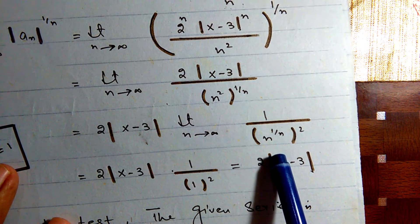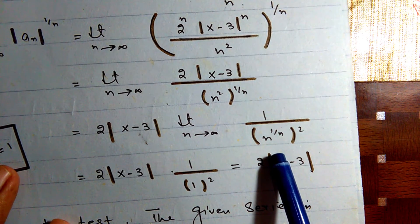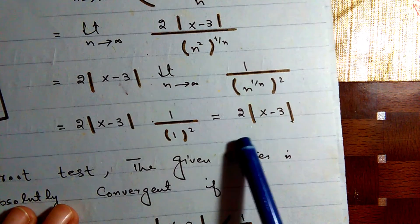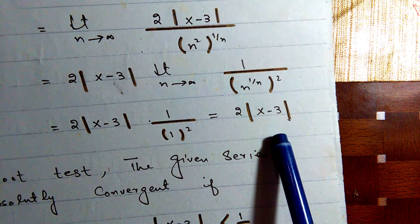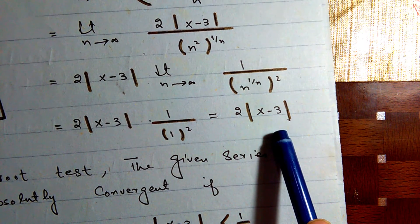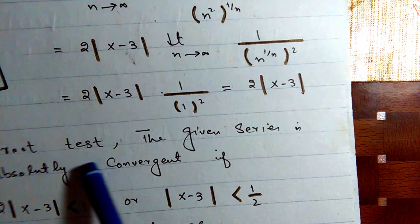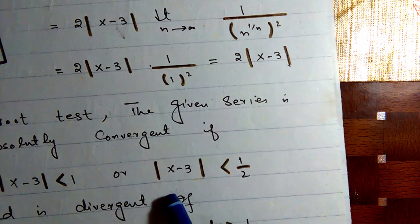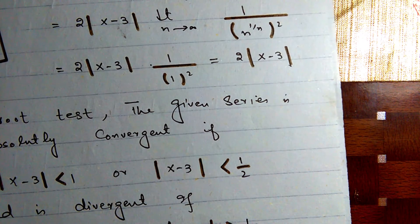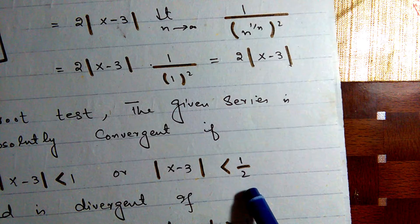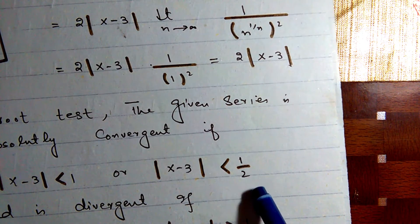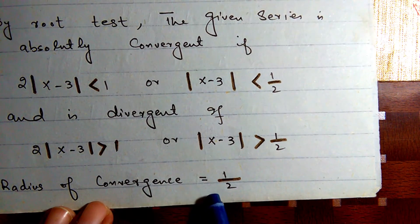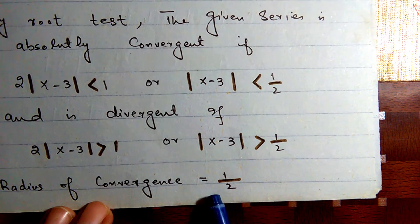After simplification, since n^(2/n) → 1 as n→∞, we get 2·|x-3|. By the root test, the series converges absolutely when 2·|x-3| < 1, i.e., |x-3| < 1/2. The radius of convergence is 1/2.